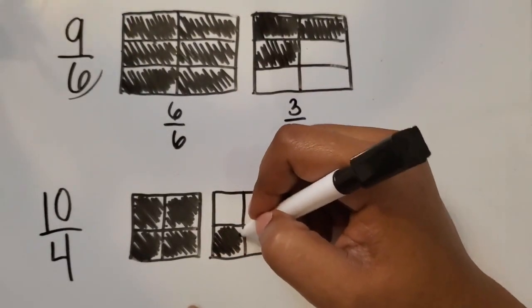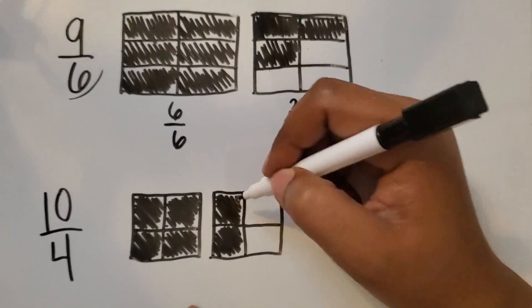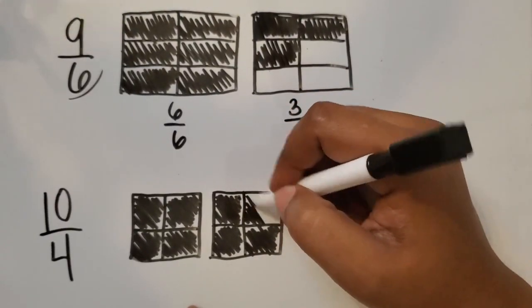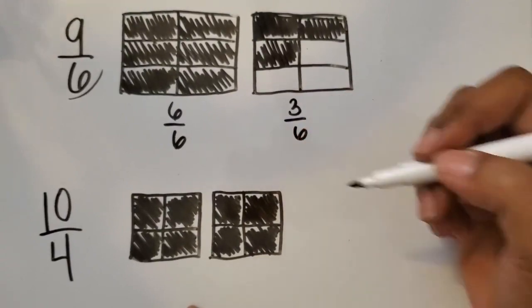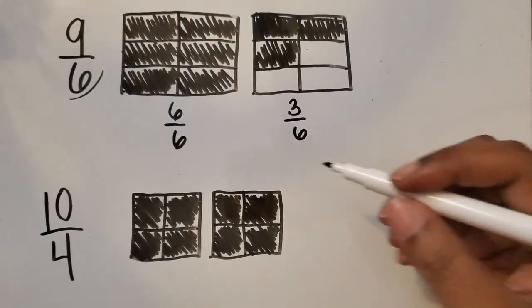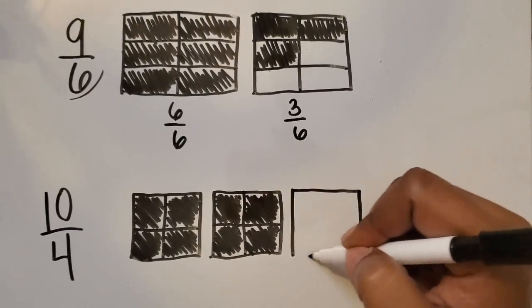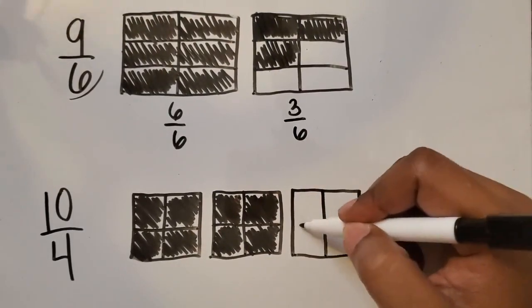This is 5 fourths, 6 fourths, 7 fourths, 8 fourths. Are we at 10 fourths yet? No. Okay, so we're going to draw another whole and partition it into fourths.